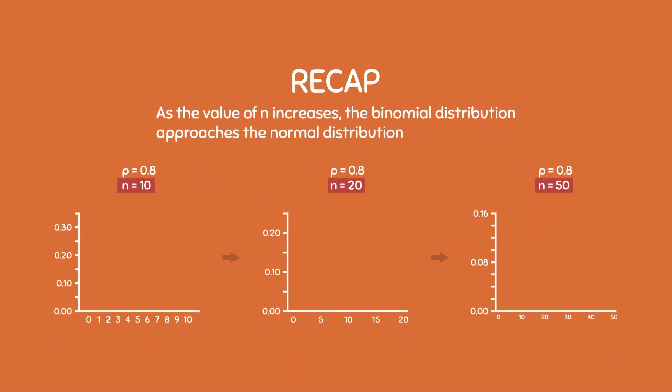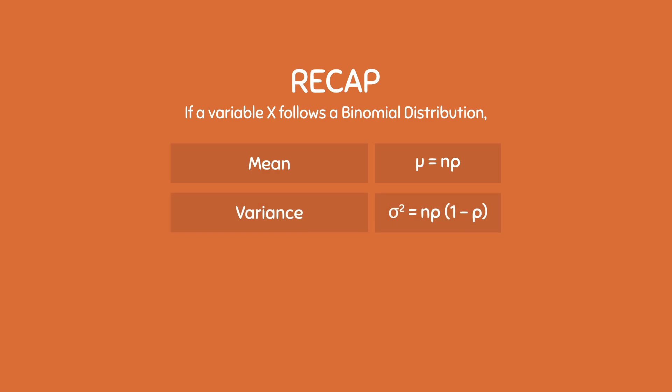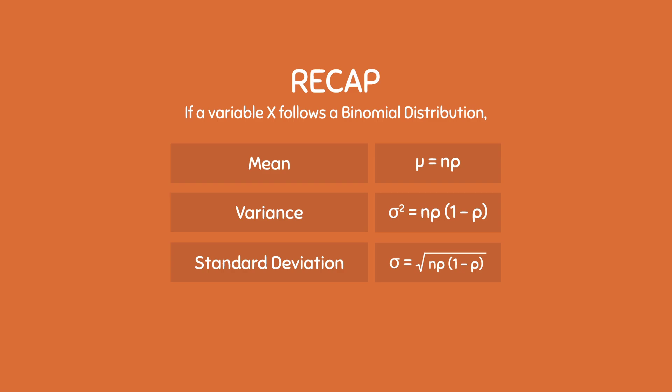As the value of n increases, the binomial distribution approaches the normal distribution. And finally, if a variable x follows a binomial distribution, then the mean mu is equal to np, the variance is equal to np times 1 minus p, and the standard deviation sigma is equal to the square root of np times 1 minus p.